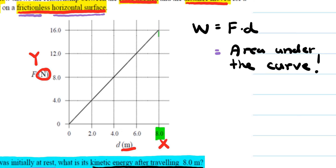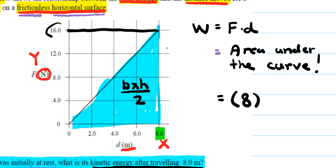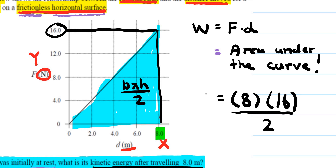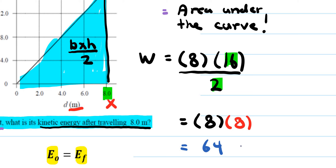Since we're traveling 8 meters, we look at that particular area, which forms a triangle. The area of a triangle is base times height divided by two. The base is 8 and the height is 16, so work equals 8 times 16 divided by 2. Sixteen divided by 2 is 8, and 8 times 8 is 64. So the work done is 64 newton-meters.